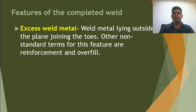Another term is the excess weld metal. After the parent metal, whatever excess metal is on the weld face side or root side is called the excess weld metal. It is the weld metal lying outside the plane joining the toes. Other non-standard terms for this feature are reinforcement and overfill. Excess metal is the technical term, but some people also call it reinforcement or overfill.